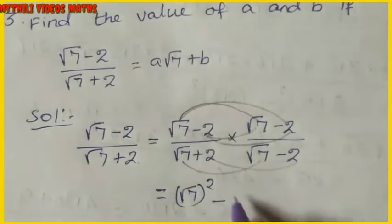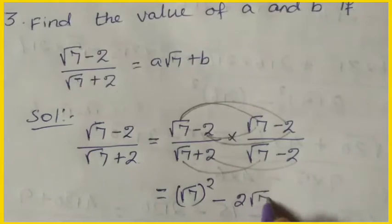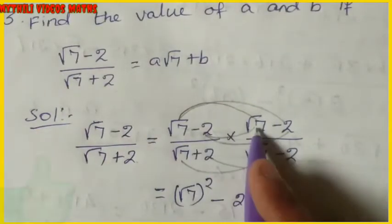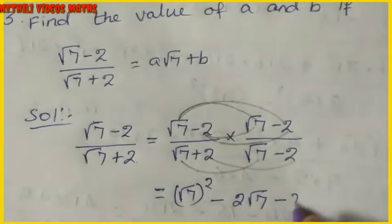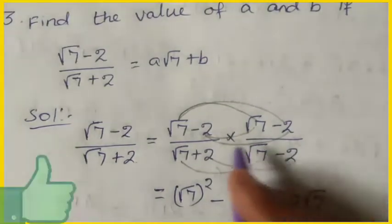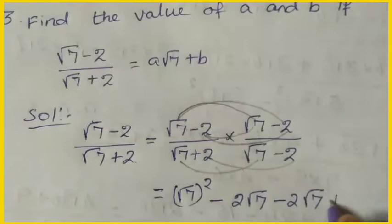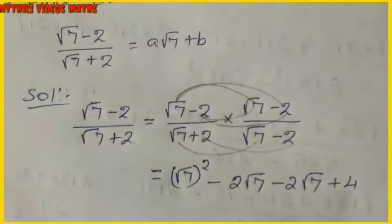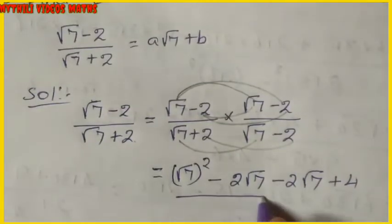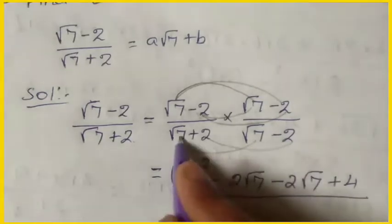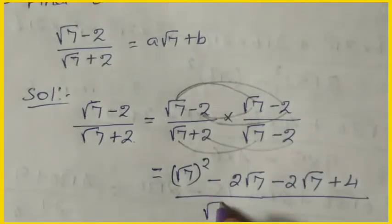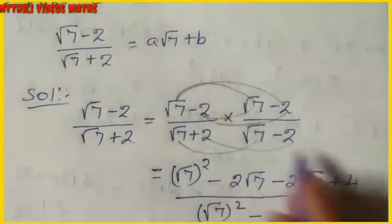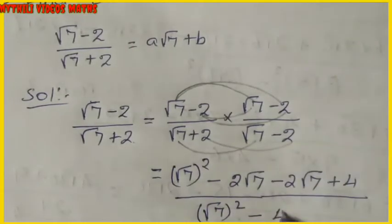Then second with first gives −2√7, and minus times minus gives plus, so 2×2 = 4. In the denominator: first terms give √7 whole square, and plus times minus gives −2×2 = −4.